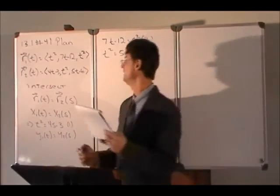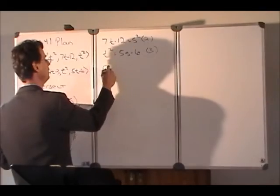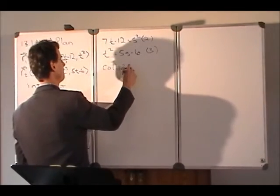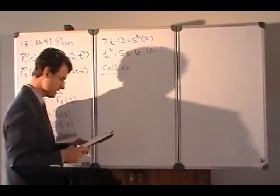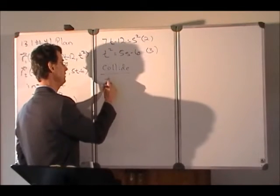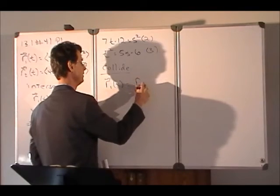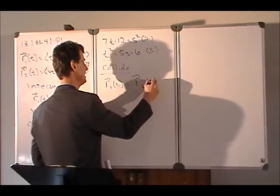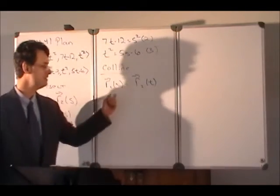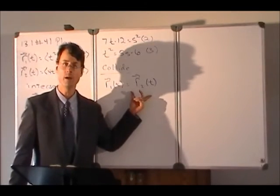Alright, so then what does it mean to collide? And what colliding means is it means that the two vectors are in the same place at the same time. So in this case, there's only one parameter t.